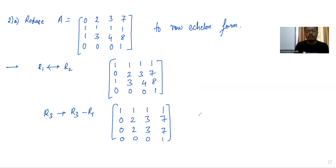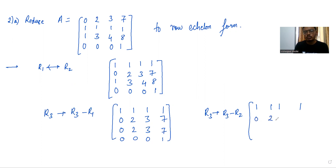Now we apply the row operation R3 changes to R3 minus R2. The resulting matrix is: 1, 1, 1, 1 / 0, 2, 3, 7 / 0, 0, 0, 0 / 0, 0, 0, 1.